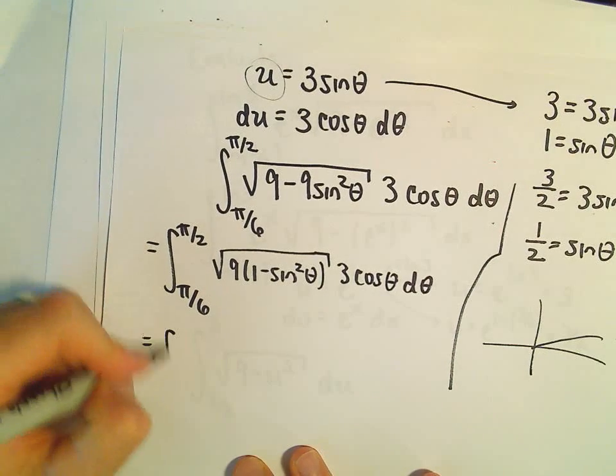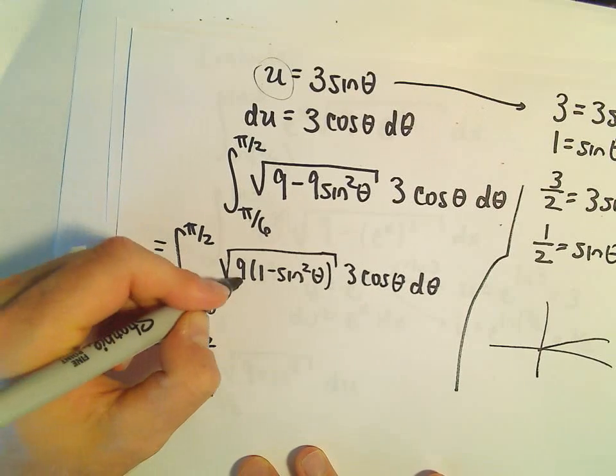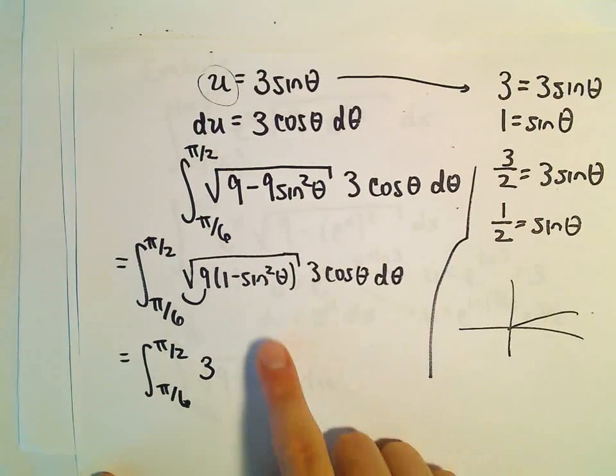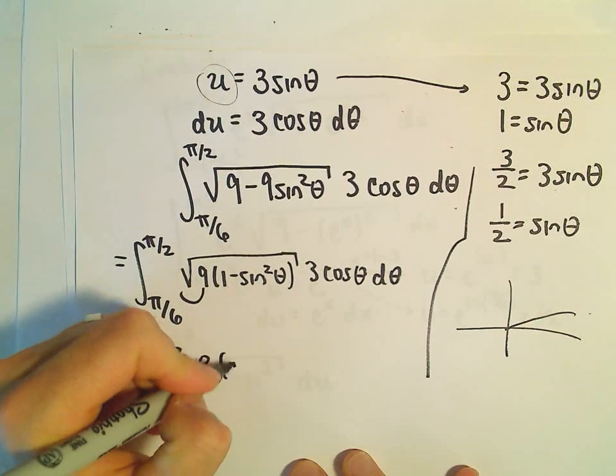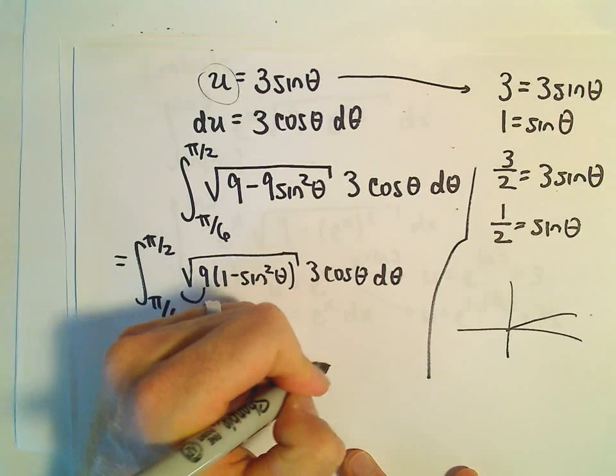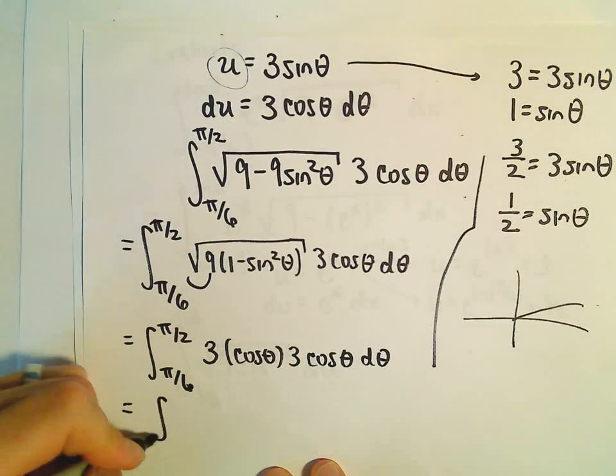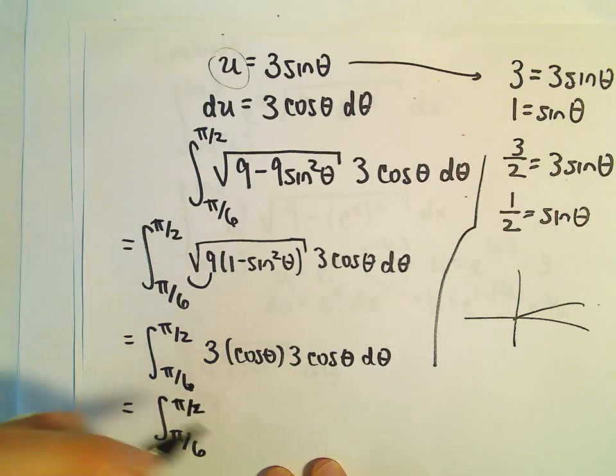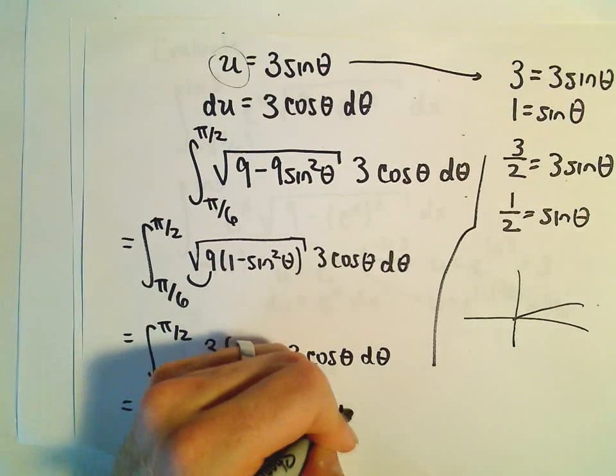We've got 3 cosine theta d theta. The 9 we can pull out as a 3. The 1 minus sine squared, that's going to be the same thing as cosine squared. But then we'll take the square root, so we'll have a cosine theta. But then we have our 3 cosine theta d theta. So we've got the integral from pi over 6 to pi over 2 of 9 times cosine squared theta d theta.